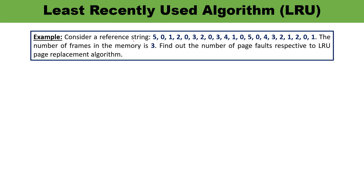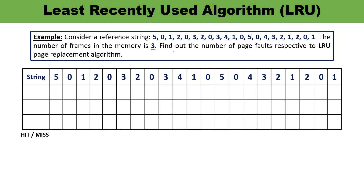Now let us take an example. Here our reference string is given and the number of frames in the memory is three. Number of frames means you have to take three frames — that is three rows you need to draw. I have drawn a table; in each column I have written one digit, and here are three frames: F1, F2, and F3. I will be entering the data starting from F1. Whichever frame you start from must remain consistent throughout the question.